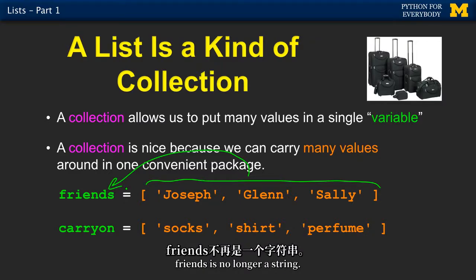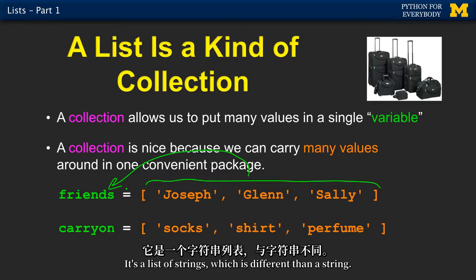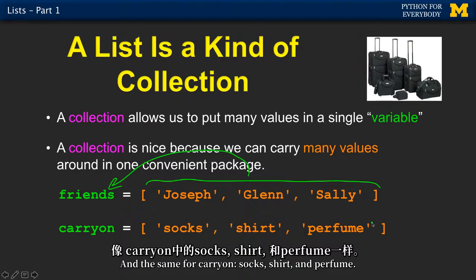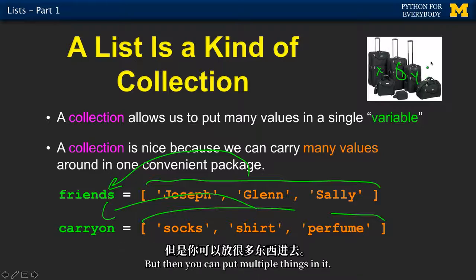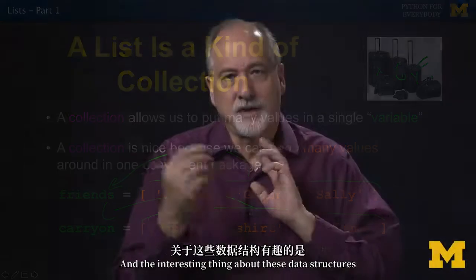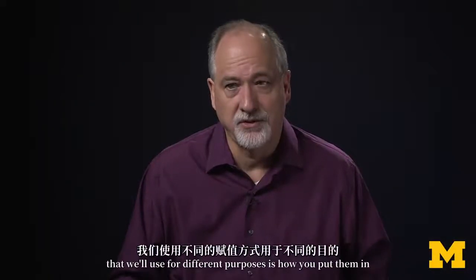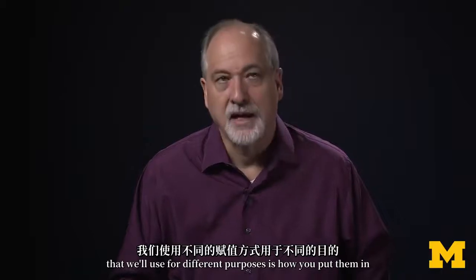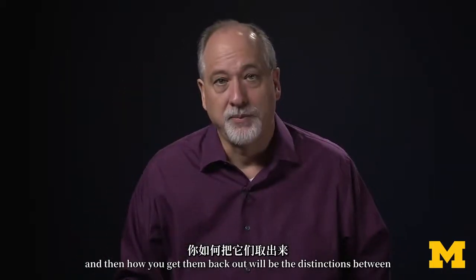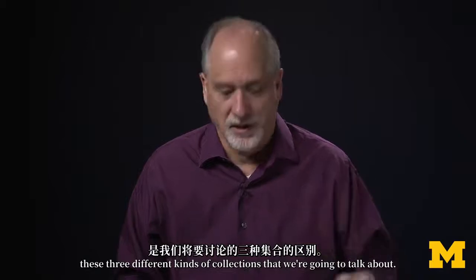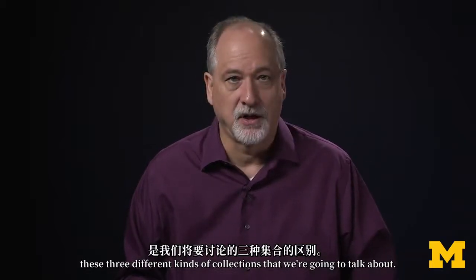Friends is no longer a string — it's a list of strings, which is different than a string. The same for carry-on with socks, shirt, and perfume. You can think of it as a piece of luggage with a name like x or y, but you can put multiple things in it. How you put things in and get them back out will be the distinctions between the three different kinds of collections we're going to talk about.